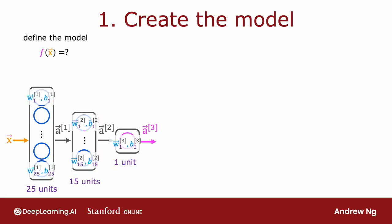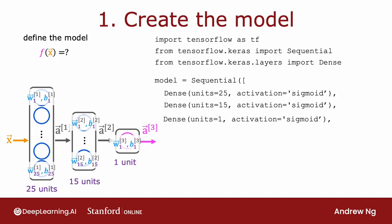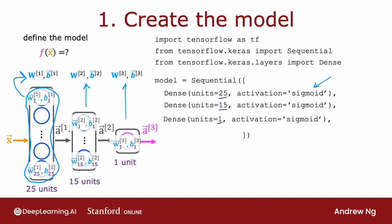The first step specifies the entire architecture of the neural network. This code snippet tells TensorFlow there are 25 hidden units in the first hidden layer, then 15 in the next, and one output unit, using the sigmoid activation. Based on this, we know the parameters w1, b1 of the first layer, parameters of the second layer, and parameters of the third layer. This tells TensorFlow everything it needs to compute the output a3, or f of x, as a function of the input x and parameters wl and bl.